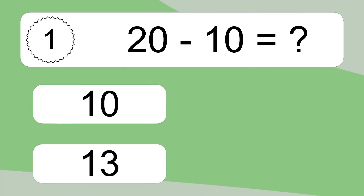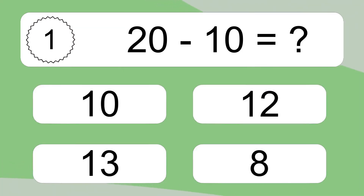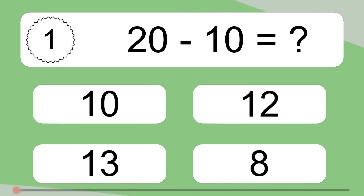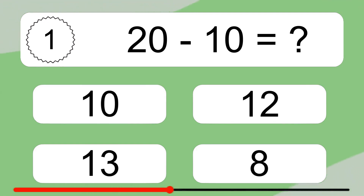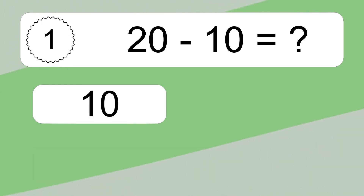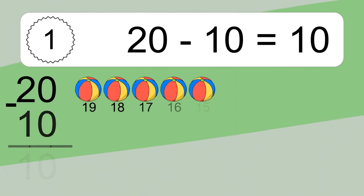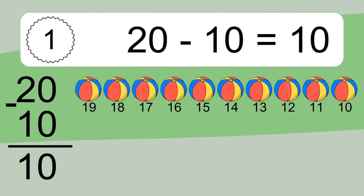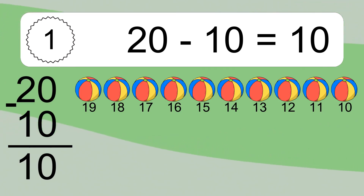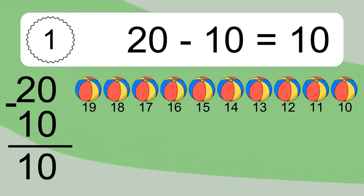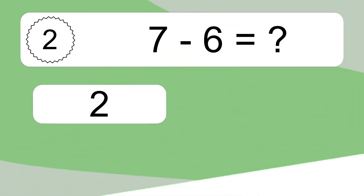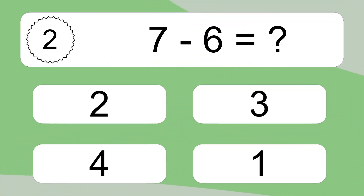20 minus 10 equals what? 20 minus 10 equals 10. Let's count it: 19, 18, 17, 16, 15, 14, 13, 12, 11, 10.